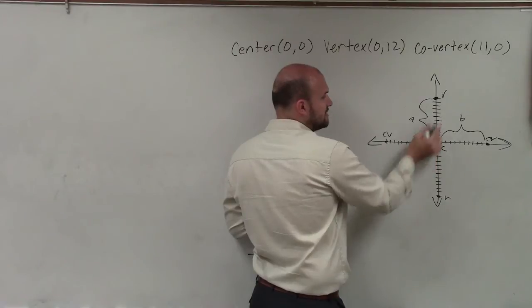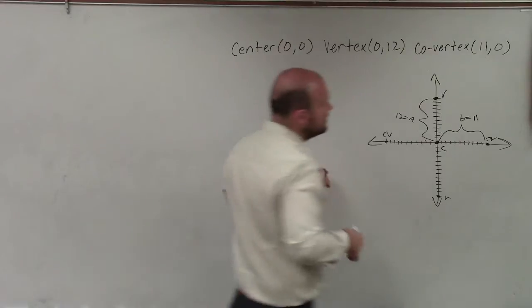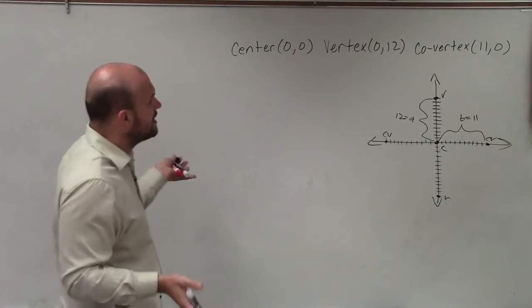The distance from the center to the vertex is 12, and the distance from the center to the co-vertex is 11. So we know what A and B are. So we can start writing our equation.